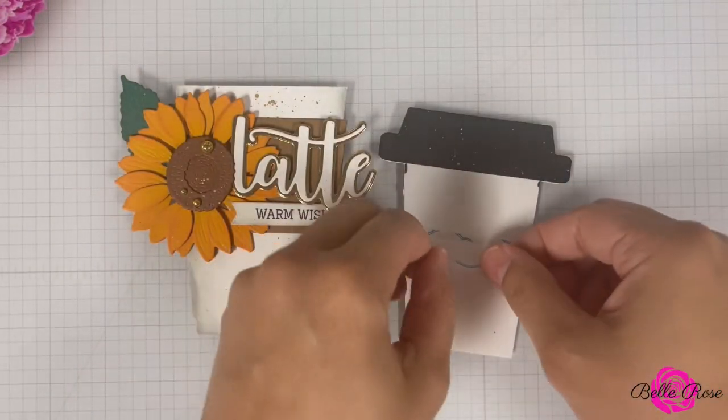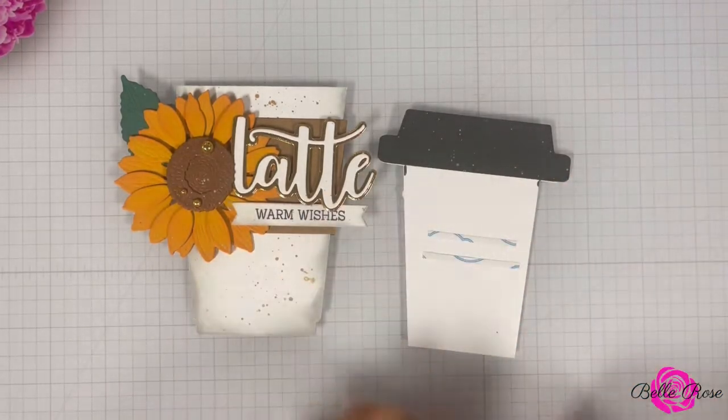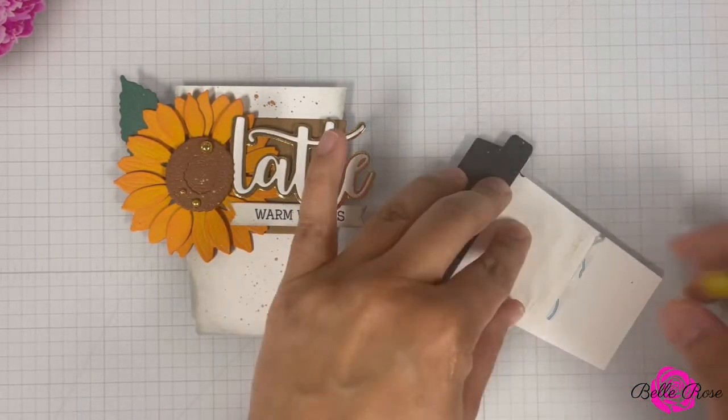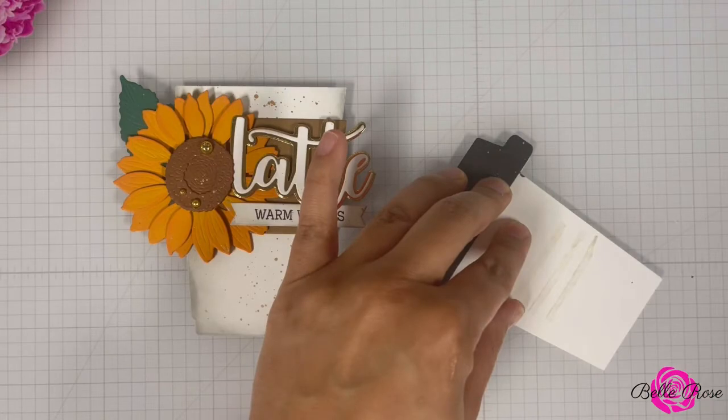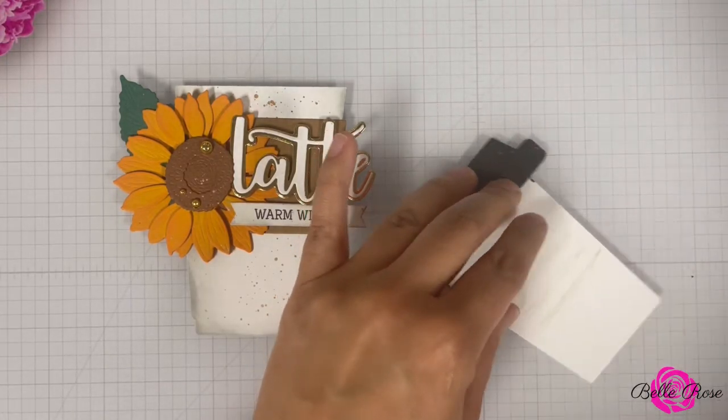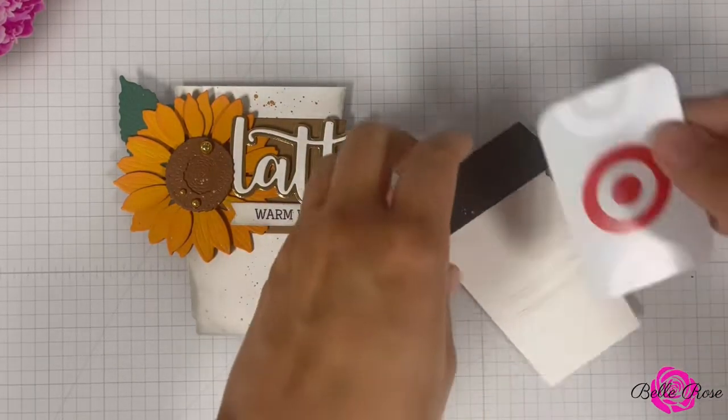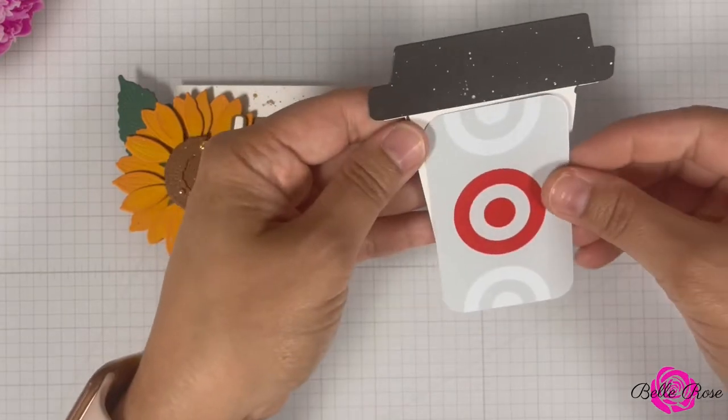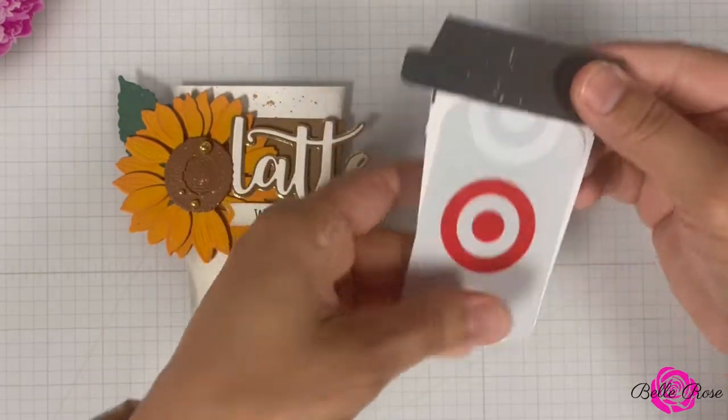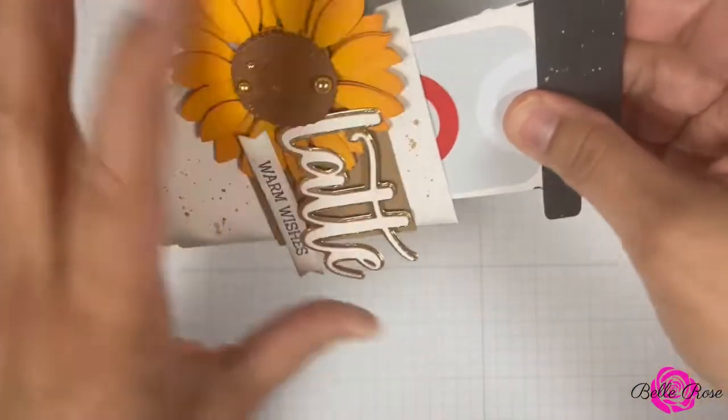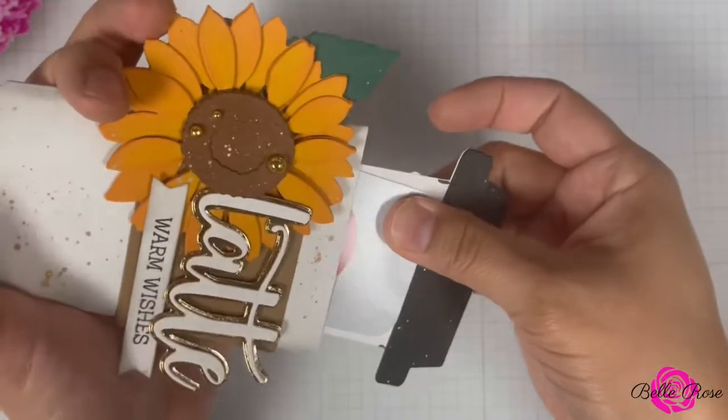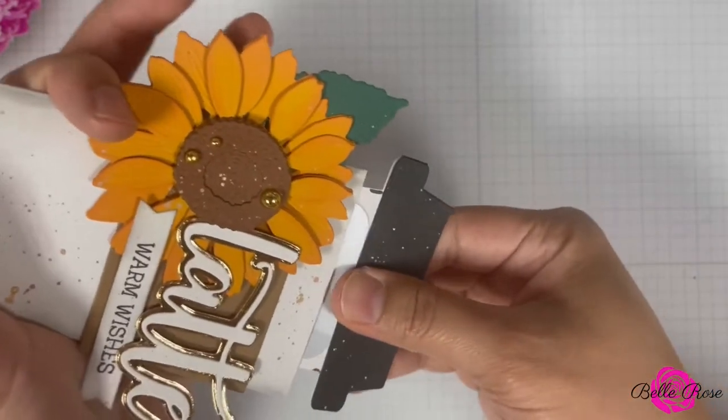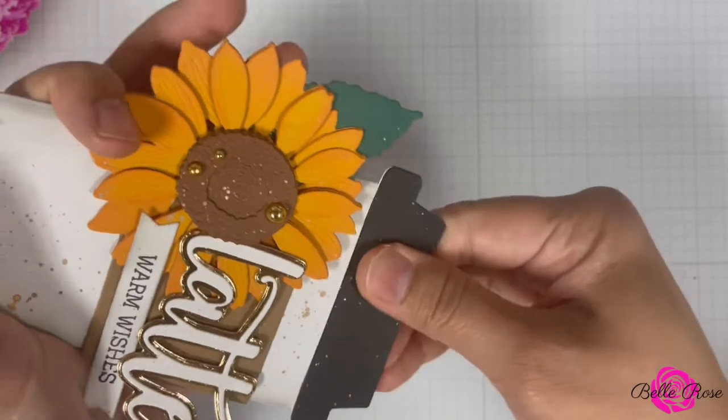Now I'm going to add adhesive tape to my gift card insert and after I remove the backing, I'm then going to place the gift card on the adhesive tape. And then from there, I'm going to do one final test to make sure that the gift card is secured and there is no chance of it falling out. I am really happy with how this turned out.